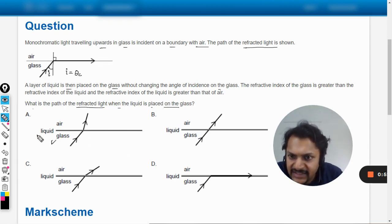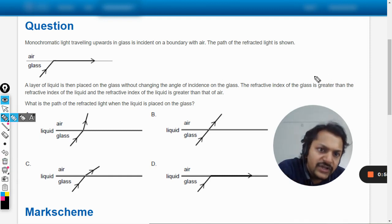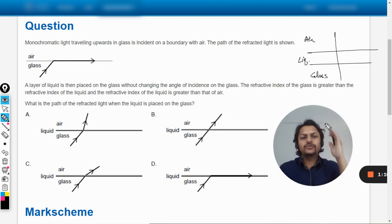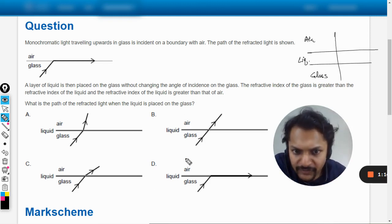So it means like this is glass, this is liquid, and this is a layer of air. So technically we are talking about this thing - this is glass, then this is liquid, then this is air. So the light must be passing through all these three mediums like one, two, three. We have to find which diagram it will be.